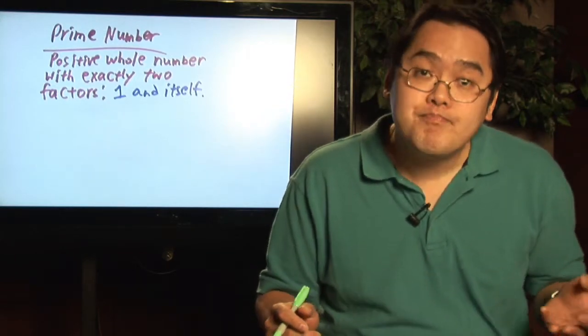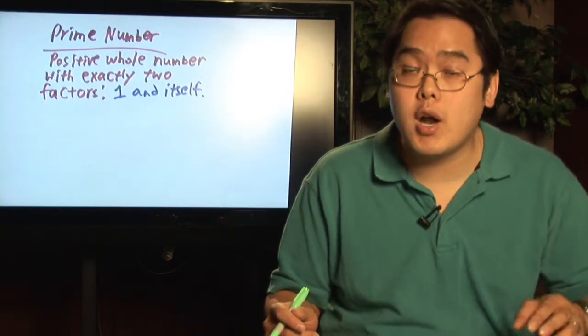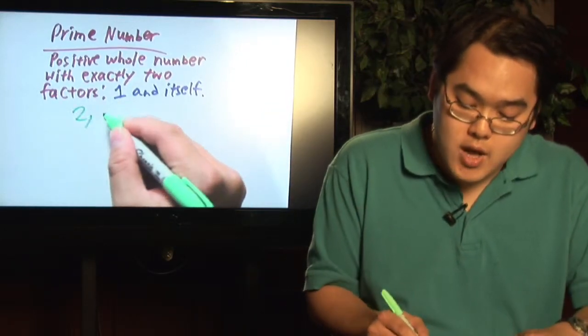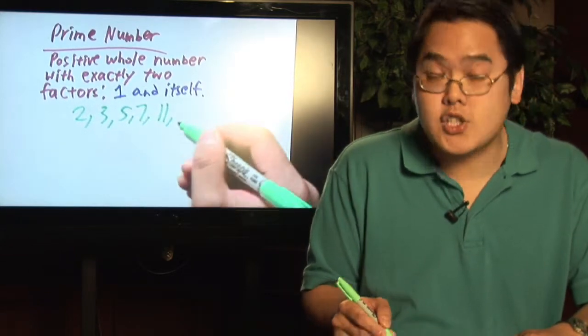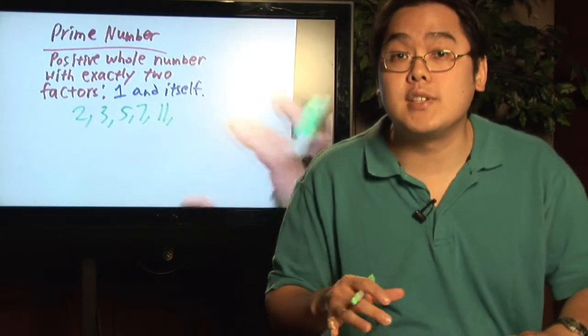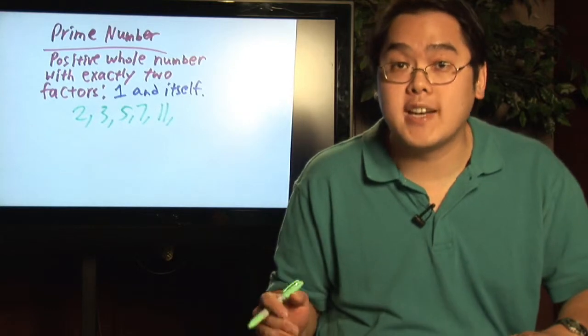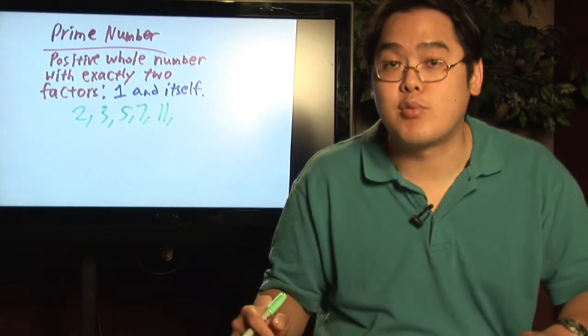But basically, some numbers that come to mind that are prime are, for example, two, three, five, seven, 11. The list can go on and on because as we speak, they're still trying to find the next larger prime number.